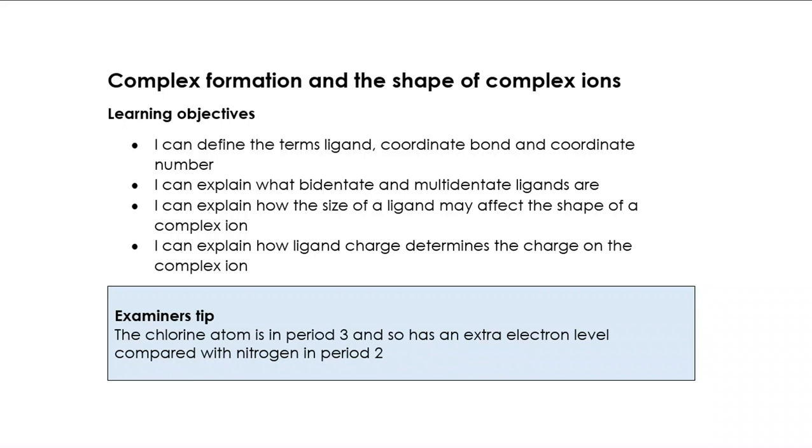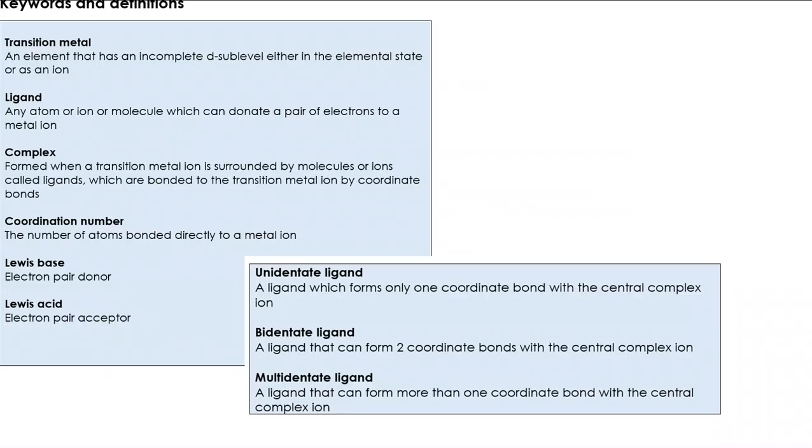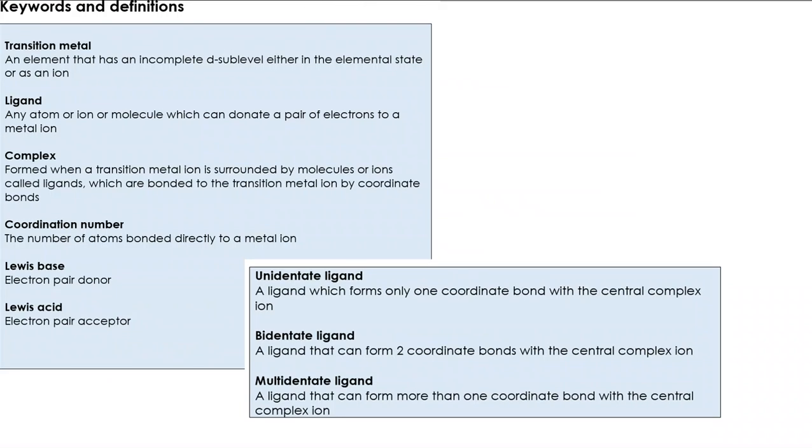Got a little tip here: chlorine atoms are bigger than some of the others, for example nitrogen. Chlorine is in period three. That actually becomes really important when we consider the shapes of complexes that contain chlorine ligands. But we possibly need to look at what that word actually means. We've got here some keywords and the definitions that you're going to need to know and be able to use.